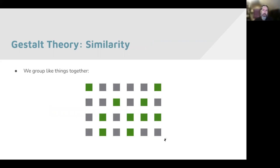One of the principles of Gestalt Theory is similarity — we like to group things together. When we look at this set of squares, we say, 'oh, that's a group of them, they're all connected.' But also, we notice there's a group of gray squares and a group of green squares. Our brains separate those out, categorize them, and organize the information based on the patterns we're seeing.